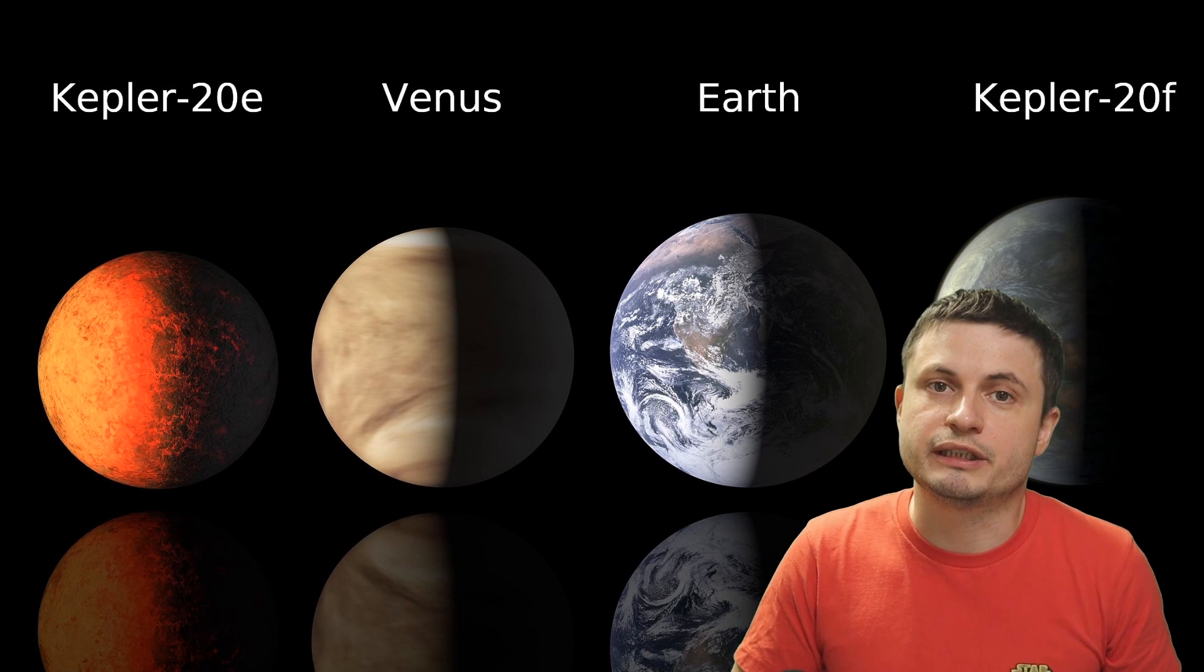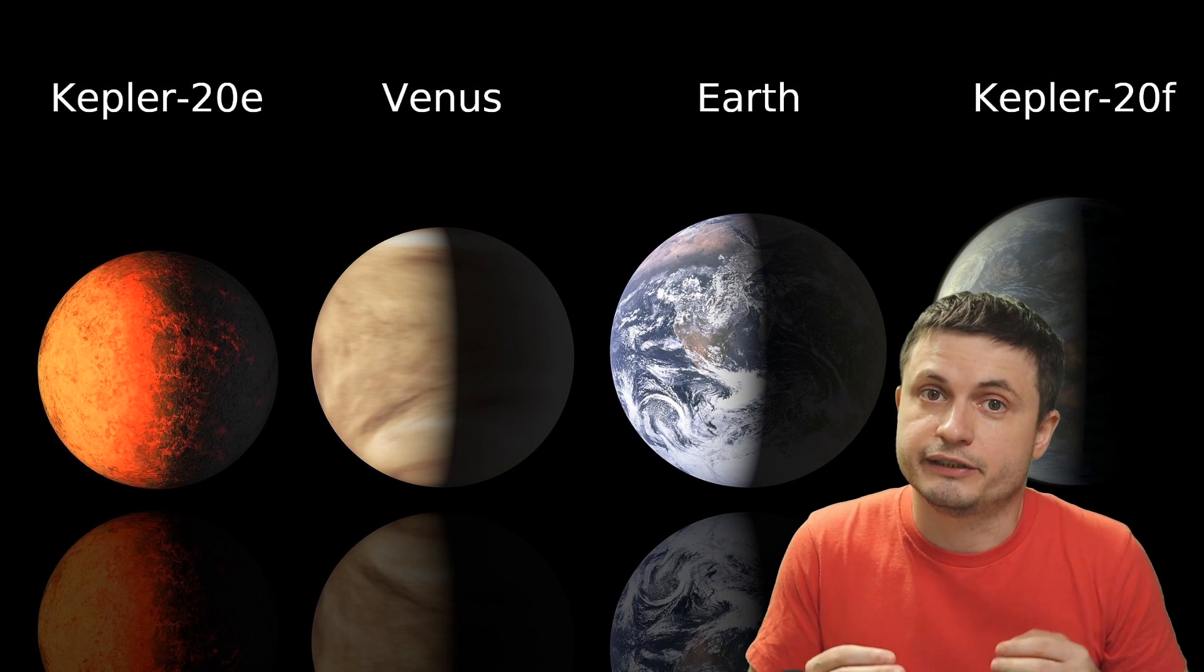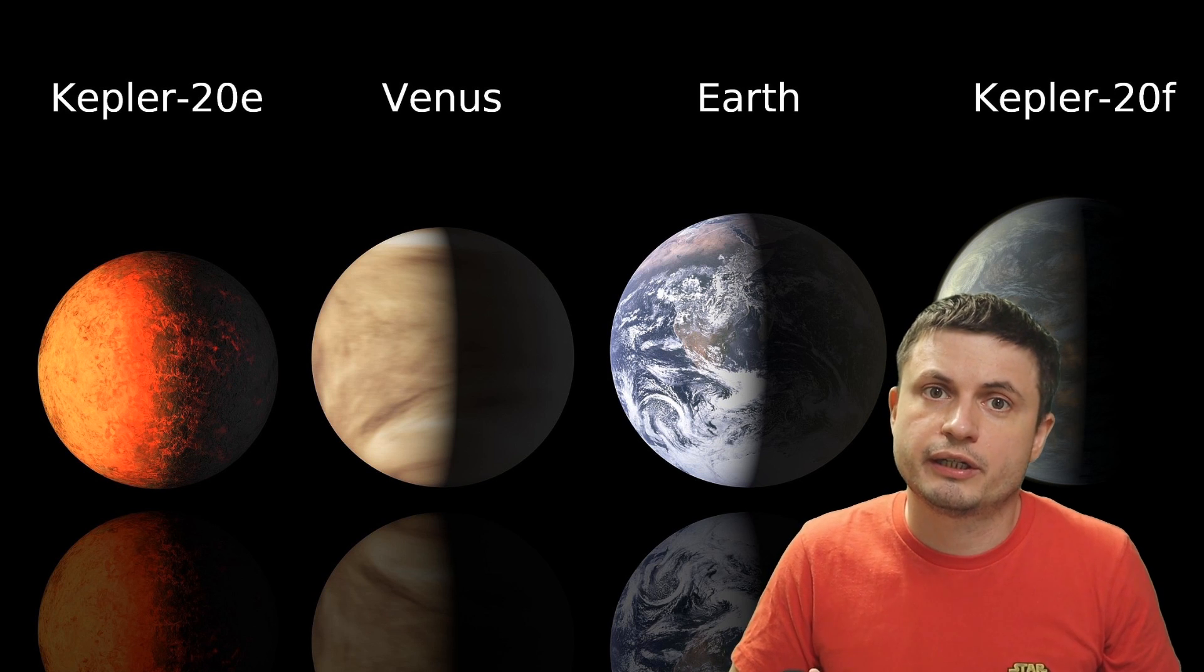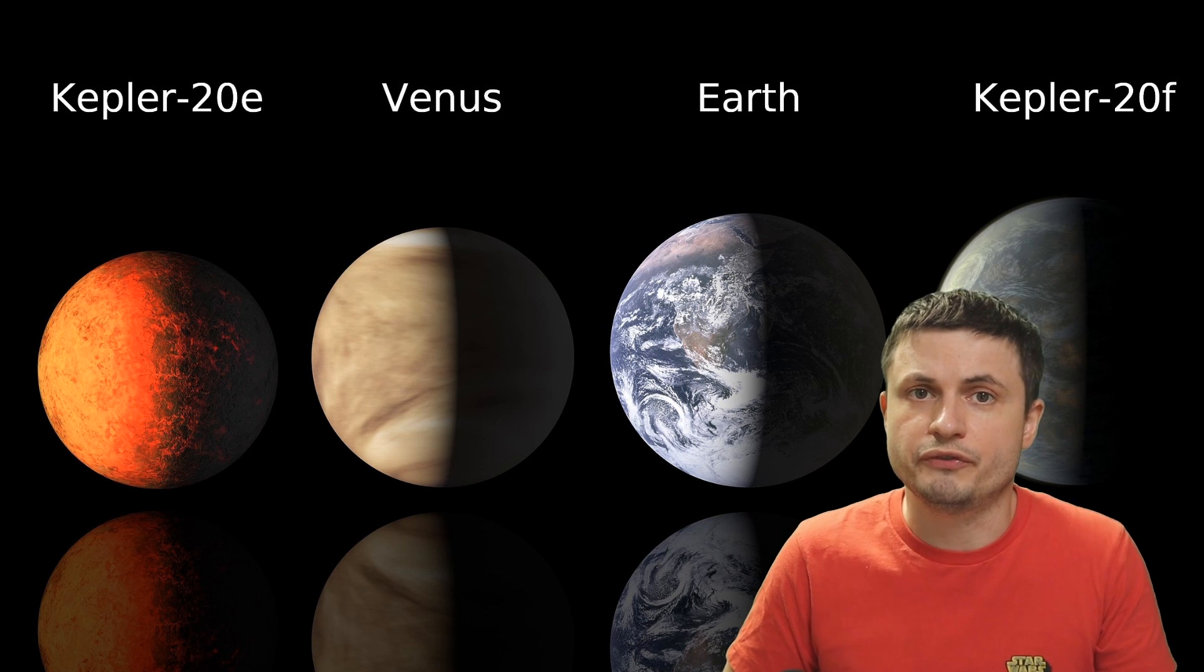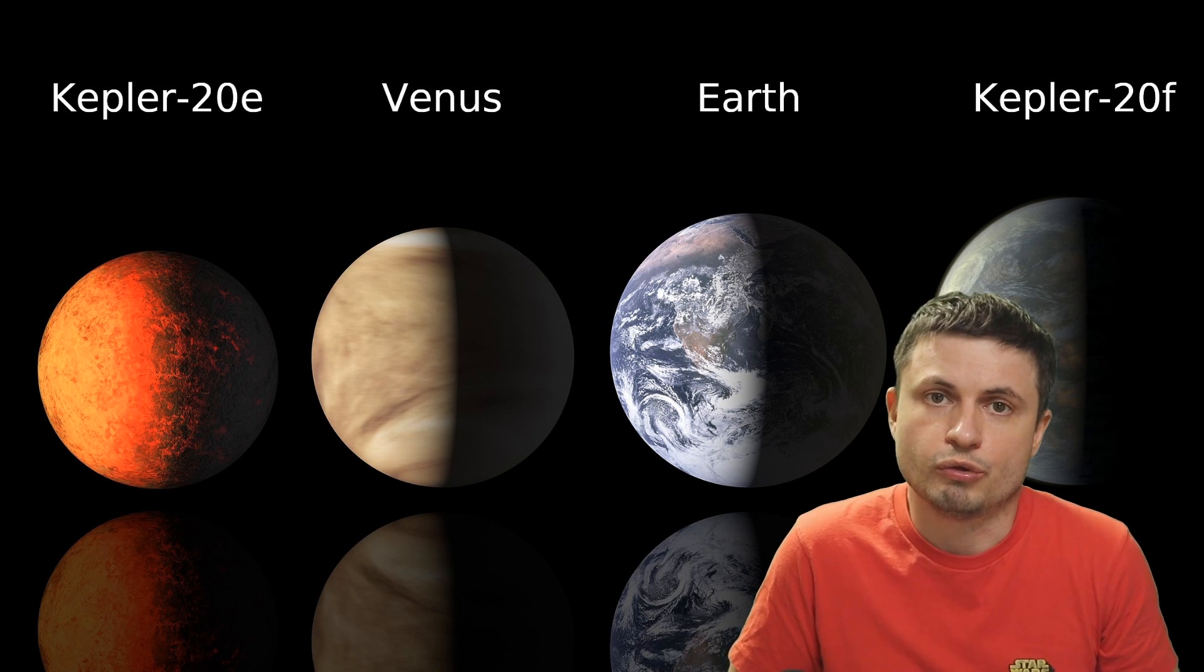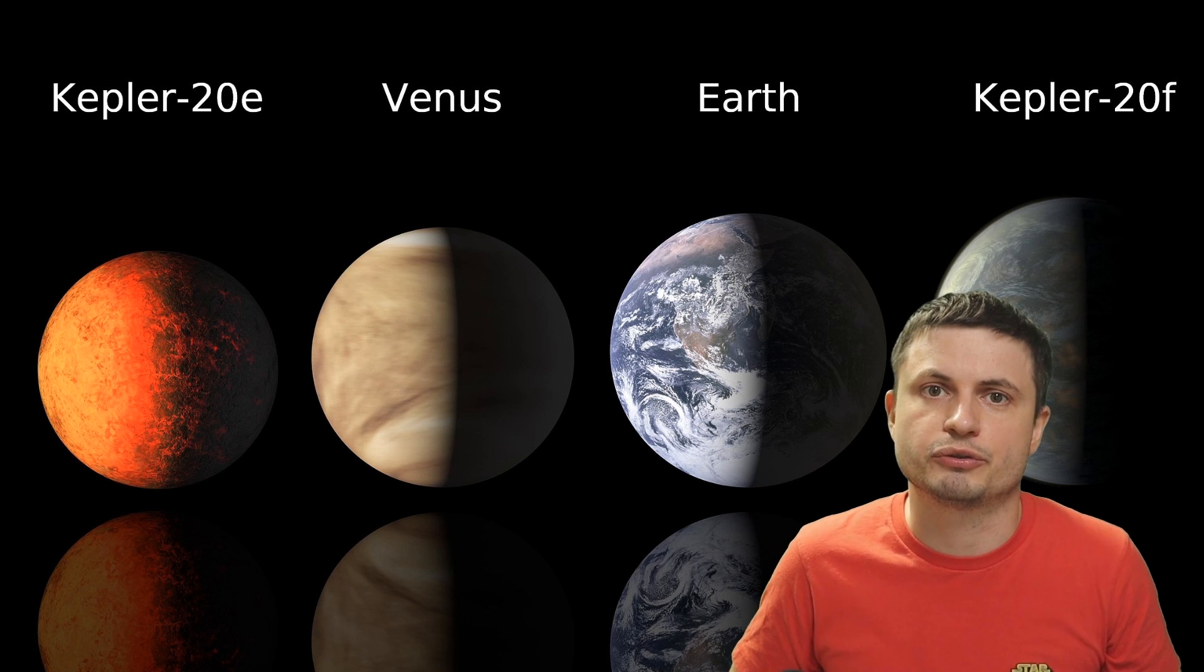At least habitable in the sense that it's about the same size as Earth, and it's about the same distance away from its star that's very similar to our own Sun. It obviously could be more similar to Venus, for example, and have tremendously hot conditions on the surface, or more similar to Mars and have nothing on the surface. So calling it habitable in this case is still a little bit of a misnomer.